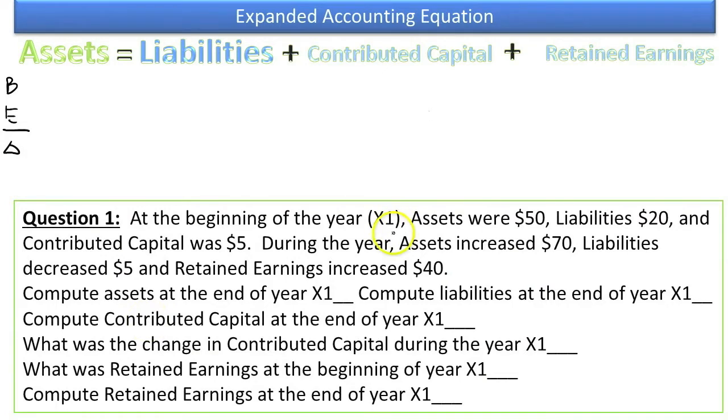At the beginning of the year, X1, assets were $50, liabilities were $20, and contributed capital was $5. So we don't know beginning retained earnings.